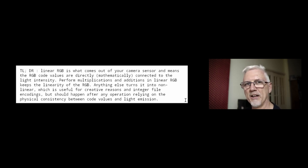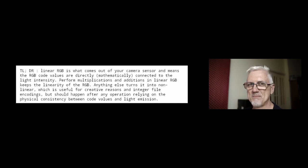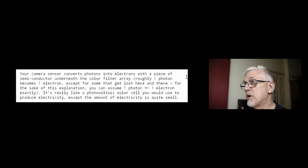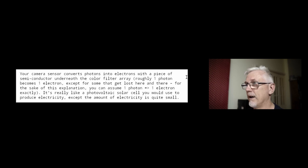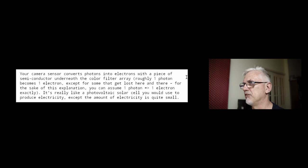At this point in time, that probably still sounds like Greek to you. Let's just work our way through the email, and hopefully this will all make sense in the end. Your camera sensor converts photons of light into electrons with a piece of semiconductor underneath the color filter array. Roughly one photon becomes one electron — some get lost here and there — but for the sake of this explanation, you can assume one photon equals one electron.